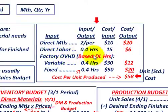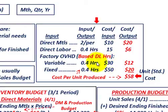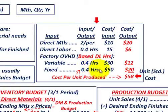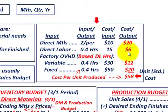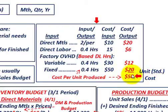For factory overhead, it's based on direct labor hours. Variable factory overhead is 0.4 hours per unit times $30 per hour, giving $12 per unit. Fixed factory overhead is 0.4 hours per unit times $50 per hour, giving $20 per unit. Adding direct materials ($20), direct labor ($6), variable overhead ($12), and fixed overhead ($20) gives a standard unit cost of $58 per unit.